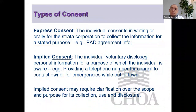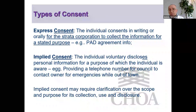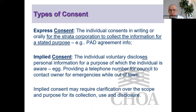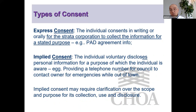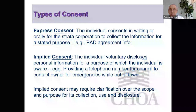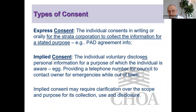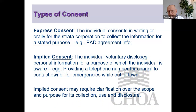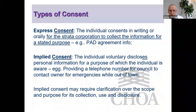Express consent is where an owner consents in writing for the strata corporation to collect their information — usually pre-approved deposit forms. Another form is where an owner provides an email address and says they wish formal notices to be sent there — they have given express consent. Implied consent is where individuals voluntarily disclose information, such as giving a telephone number to council for emergencies. Implied consent requires clarification over the scope and purpose — giving a phone number for emergencies doesn't authorize the strata to distribute it to other parties.